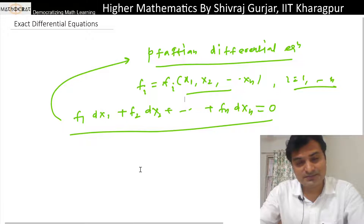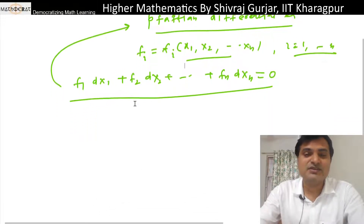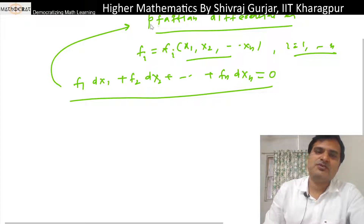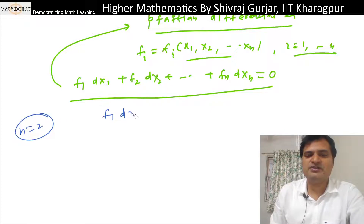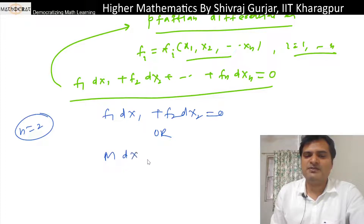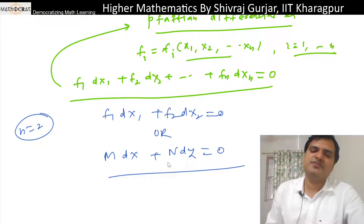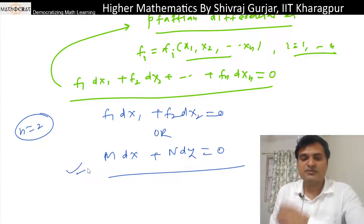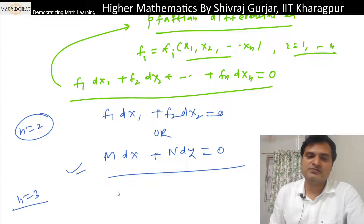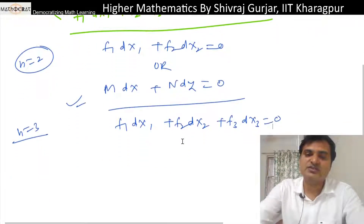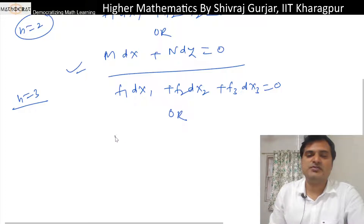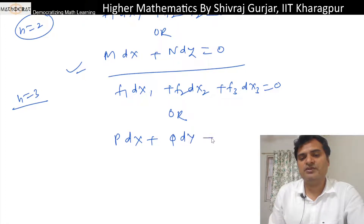For our purposes, the equation will involve two or at most three variables. When n equals two, the form is f1 dx1 + f2 dx2 = 0, which we study as M dx + N dy = 0. This is a special form of the Pfaffian equation of first degree and first order. For three variables, the equation is f1 dx1 + f2 dx2 + f3 dx3 = 0.